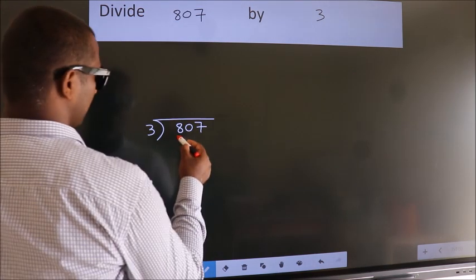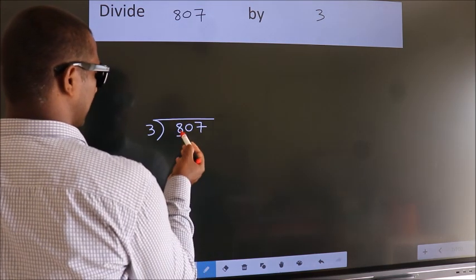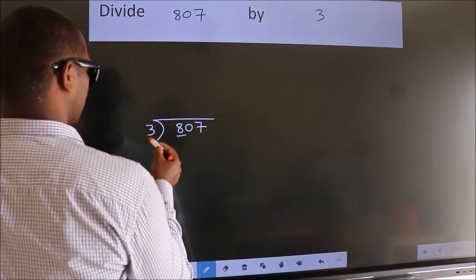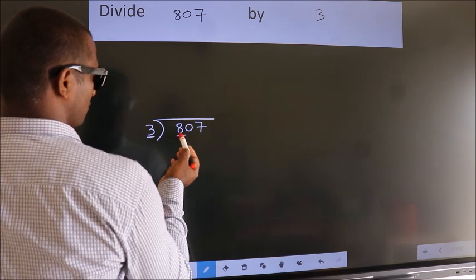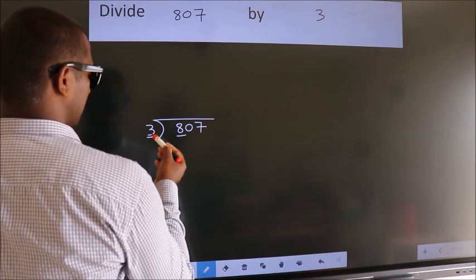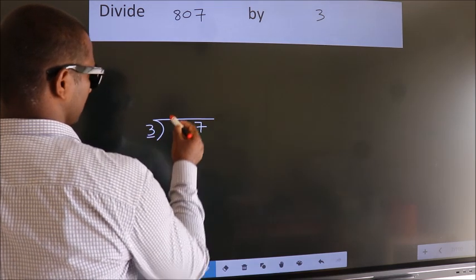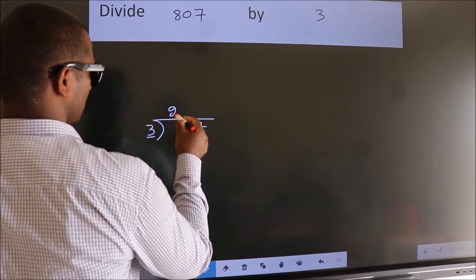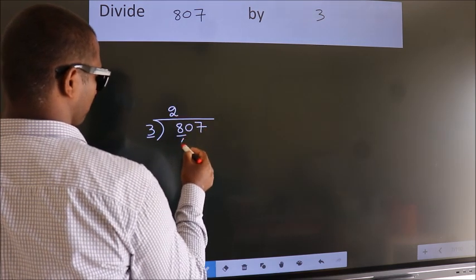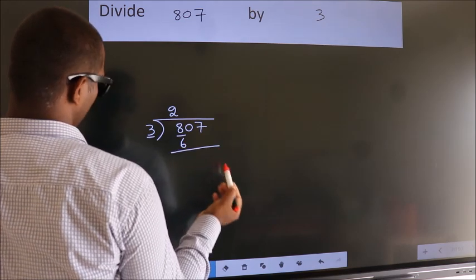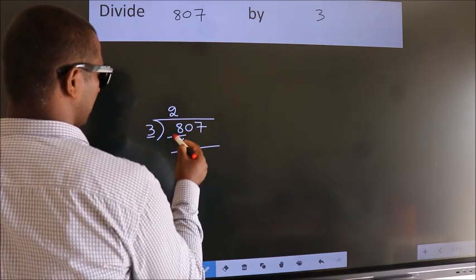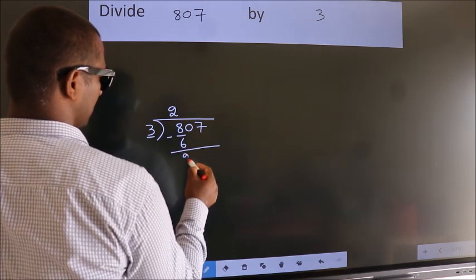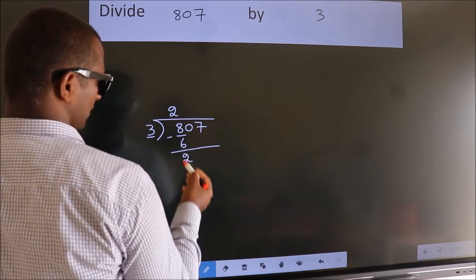Here we have 8, here 3. A number close to 8 in the 3 table is 3 twos: 6. Now we should subtract. We get 2.